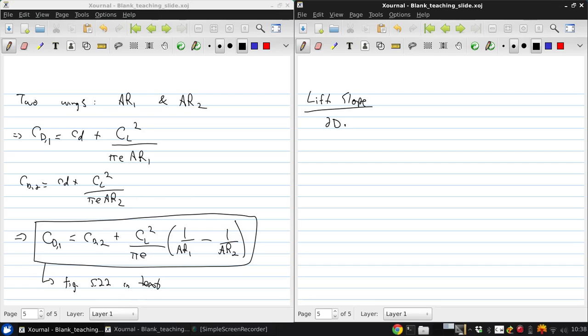So remember in 2D, for an airfoil, we had the lift slope A0, which by definition was dCl/dα. For a wing in 3D, we can similarly define A as dCL/dα. And what we'll show is that A is always less than A0.